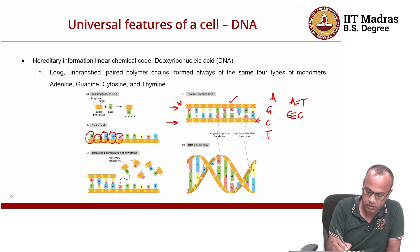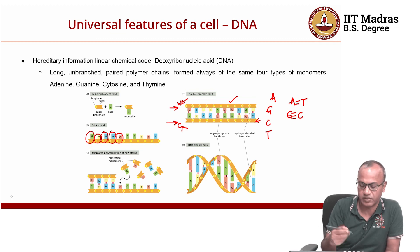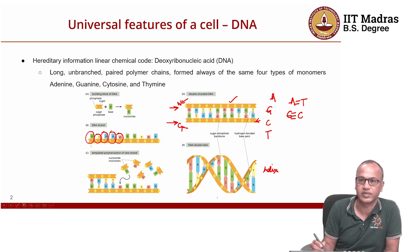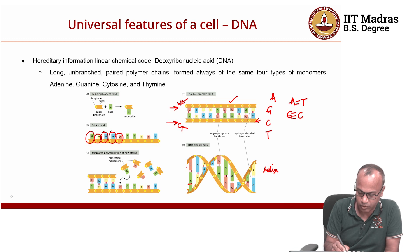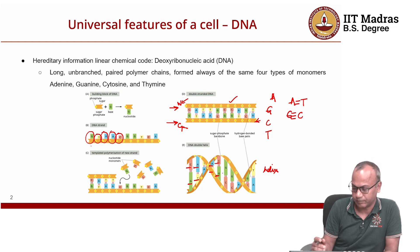The top strand is called the Watson strand and the bottom strand is called the Crick strand, named after the two scientists who discovered the structure of DNA. If you know the sequence of the Watson strand, you can figure out the sequence of the Crick strand, and vice versa. DNA also forms a helix — a twisted ladder shape — and in this structure G always pairs with C, T always pairs with A, and this pairing is uniform across all cells.